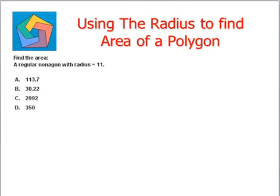Moving on to the next question. Find the area of a regular nonagon with radius equals 11. Here, the given polygon is a nonagon, and a nonagon has 9 sides.